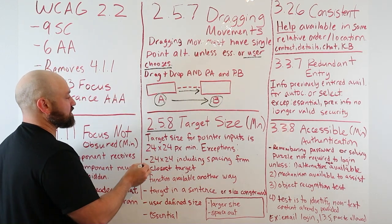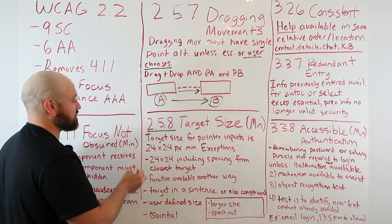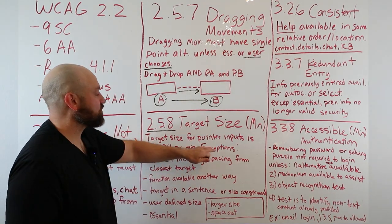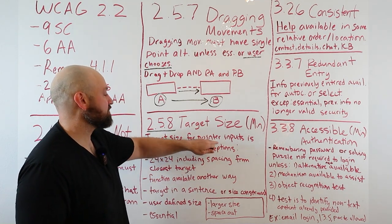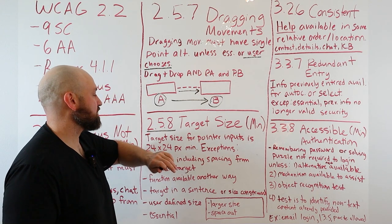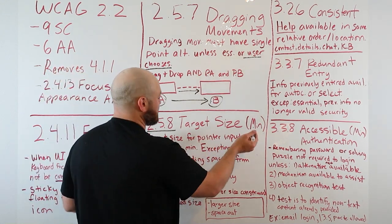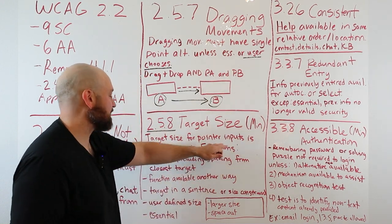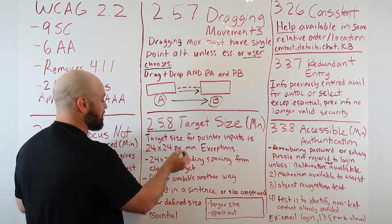With 2.5.8, we're concerned with the target size of pointer inputs. The target size for pointer inputs is 24 by 24 pixels. What is a pointer input? A pointer could be a mouse, touch, a track pad, or a stylus. The inputs are buttons, links, selectors, checkboxes, et cetera. We want to make sure the target size for those inputs is 24 by 24 minimum.